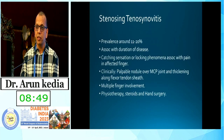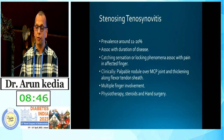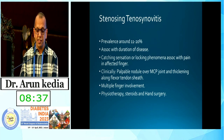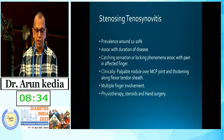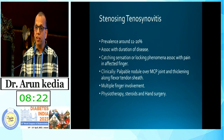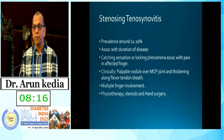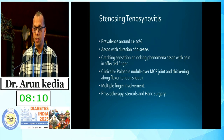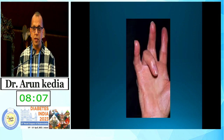Trigger finger, also called flexor tenosynovitis, has a prevalence of 11–20% associated with long duration of diabetes. Patients typically have a catching sensation or locking phenomenon with flexion of the finger and are unable to extend the finger without support. Clinically, there is a palpable nodule over the metacarpophalangeal joint and thickening along the flexor tendon. Multiple or single fingers can be involved. Early identification allows treatment with physiotherapy or intra-articular steroids; severe cases may require reconstructive or plastic surgery.